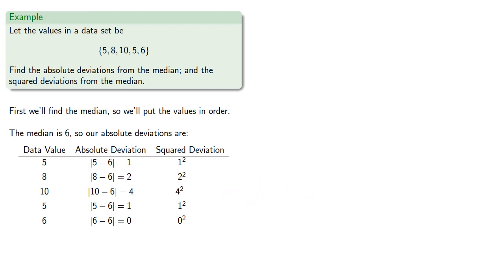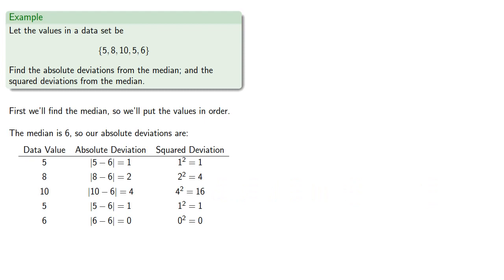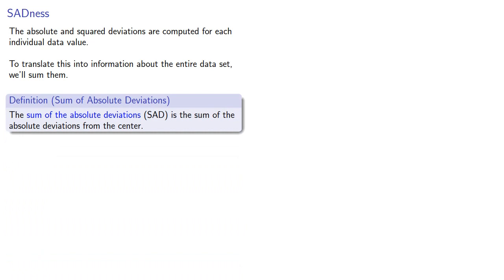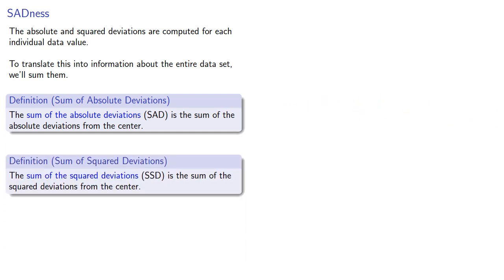Computing these values gives us the squared deviations. The absolute and squared deviations are computed for each individual data value, so if we have many data values, we get many deviations. To translate this into information about the entire set, we'll sum them. The sum of the absolute deviations is the SAD — the sum of the absolute deviations from the center. Similarly, the sum of the squared deviations is the SSD — the sum of the squared deviations from the center.